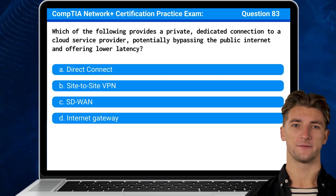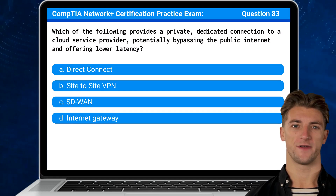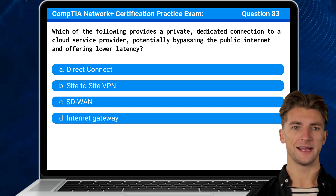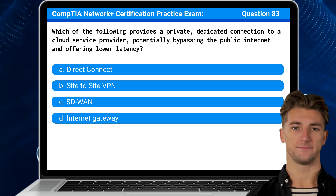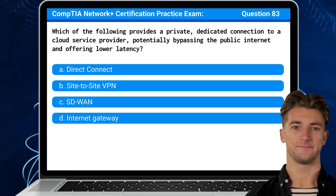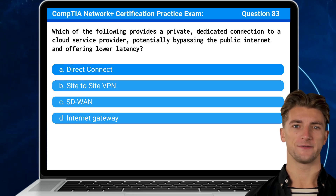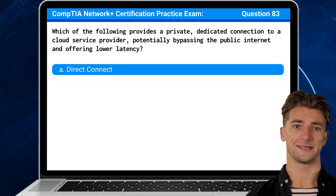Question 83. Which of the following provides a private, dedicated connection to a cloud service provider, potentially bypassing the public internet and offering lower latency? The answer is A. Direct Connect.